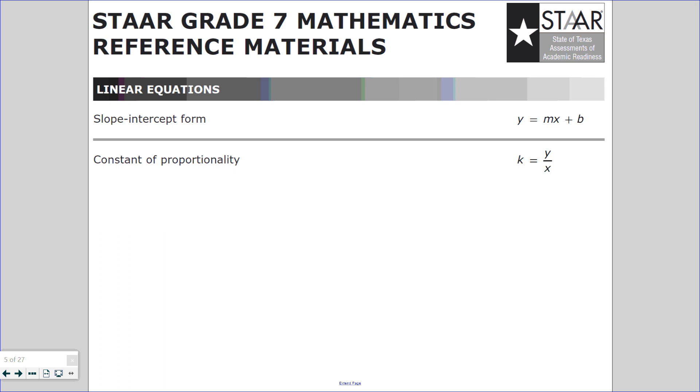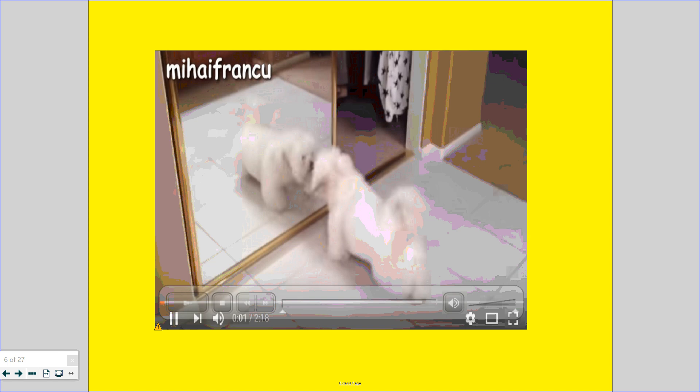So you do not need to memorize this. You will always be given it right here on a math reference chart. Constant of proportionality, which is the same as saying unit rate, it's just a fancy word for unit rate. It's k equals y divided by x. So let's watch this little short video.